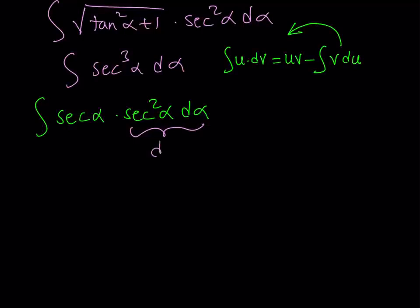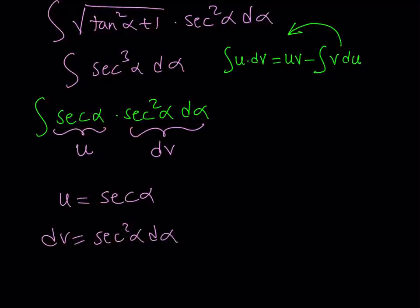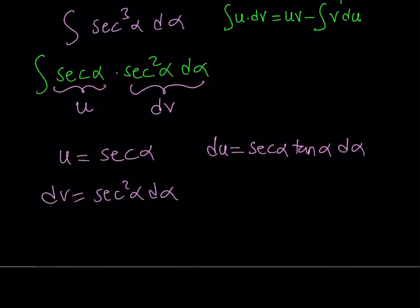So secant squared alpha d alpha is dv, and secant alpha is u. From u, we find du by differentiation: the derivative of secant alpha is secant alpha tangent alpha d alpha. From dv, we find v by integration: the integral of secant squared alpha is tangent alpha. We won't add the constant of integration here — we'll do that at the end.